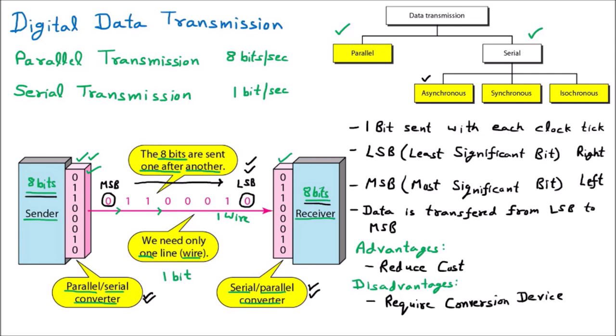There are three further types of serial communication: the first is asynchronous, the second is synchronous, and the third is isochronous.